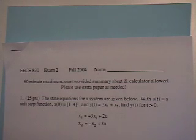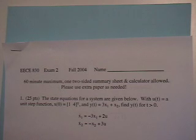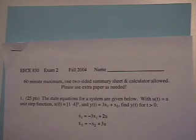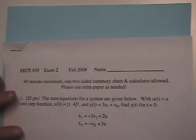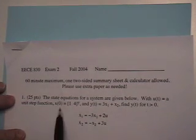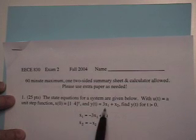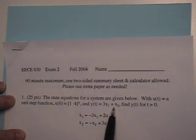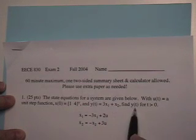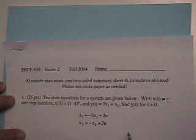We're going to look at sample exam number two and do some calculations here. This looks like it was an exam from fall 2004. Let's start with problem number one. We have state space equations given below. The input is a unit step function, initial conditions are given, and the output equation is given. Find y of t for t greater than zero.